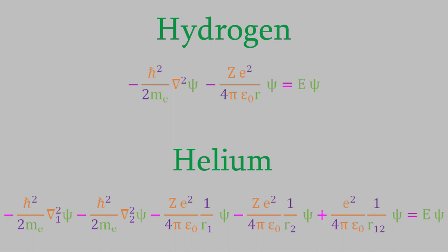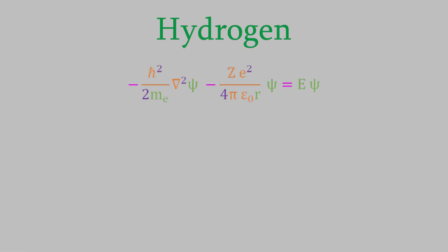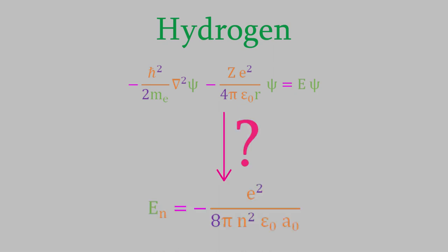But before we do that, we should talk about how we actually solved the Schrödinger equation. You might have noticed that, although we've talked about the Schrödinger equation and the wave function for atoms like hydrogen, we haven't actually seen how we solved the equation to arrive at the energy. That's what we'll start looking at today.